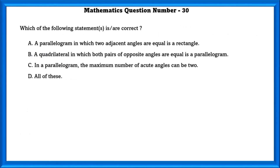Mathematics question number 30. Which of the following statements is correct? A parallelogram in which two adjacent angles are equal is a rectangle — this is true. A quadrilateral in which both pairs of opposite angles are equal is a parallelogram — this is also true. In a parallelogram, the maximum number of acute angles can be 2 — this is also true. So all of these are correct.